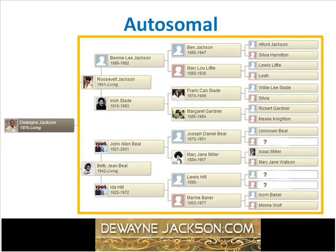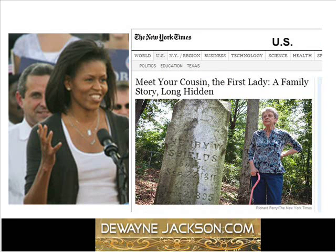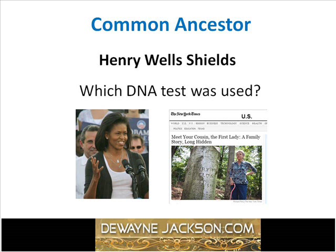Autosomal DNA testing, used for determining ethnic populations, provides results from across all of your lineages. For example, we all have 16 great-great-grandparents. I have inherited unique DNA from all 16 of my great-great-grandparents, and so have you. Autosomal DNA tests provide results from all 16 lineages, not just the one lineage as seen with mitochondrial or Y DNA. In the New York Times article, Mrs. Obama and Mrs. Tribble had a common ancestor named Henry Shields. What DNA test do you think was used to confirm their connection with Henry Shields?